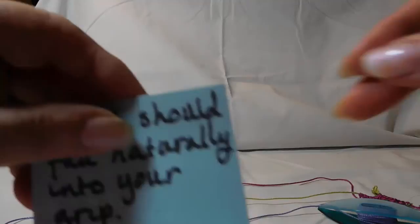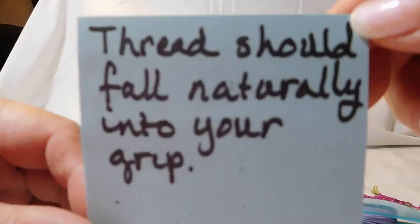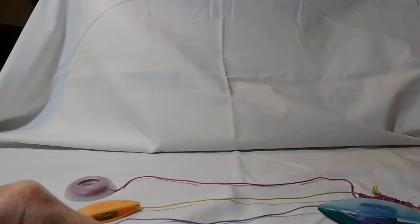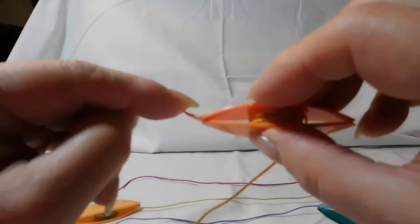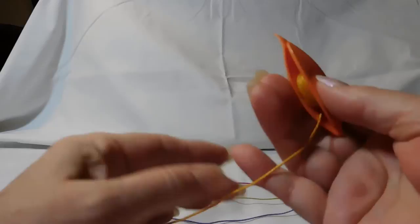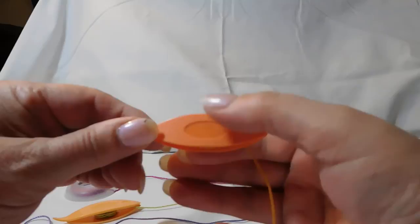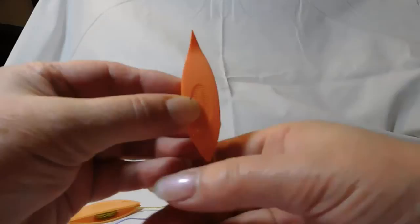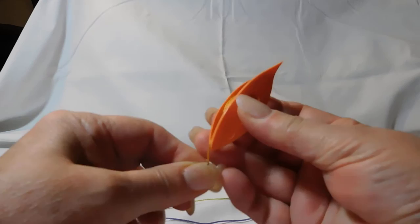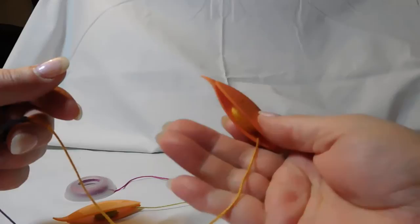For a right-handed person, you want to wind your shuttle so that the thread—I like to use my points up and hold them this way—the thread should fall out the back of your shuttle and naturally into your grip. When I hold the shuttle with the top up, the thread is wound counterclockwise, and when I pick it up it sits naturally in my hand with the thread running down through my fingers.